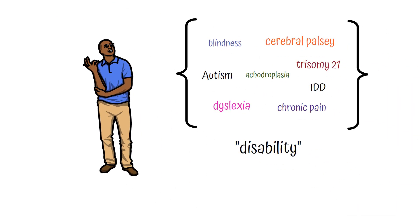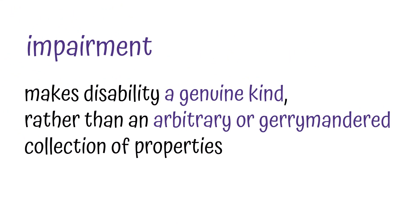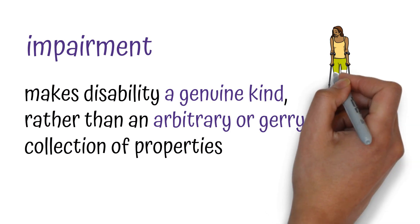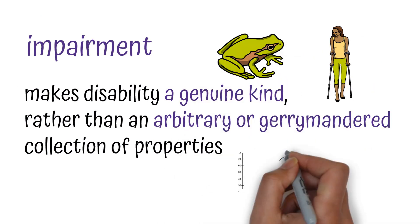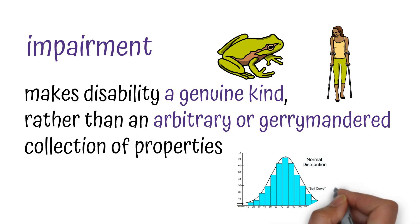And it's that reliance on value-free indicators, Kuhn argues, that keeps the medical model's definition from being an arbitrary or gerrymandered collection of properties. It relies on biological indicators and evolution and statistics to make descriptive rather than normative claims.